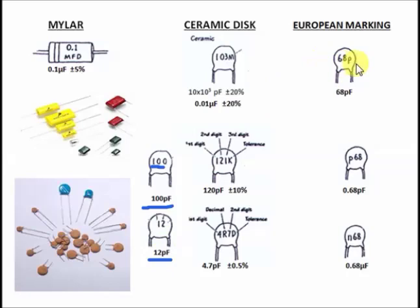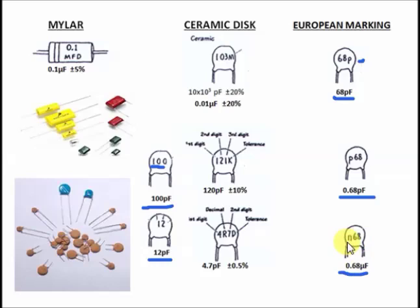Now for European marking. If you see '68p', that means 68 picofarad. If the 'p' is at the front — 'p68' — that means 0.68 picofarad. For the third example, 'N68' means 0.68 microfarad, because in European marking the letter 'N' is equivalent to micro — not nano. So in European marking, N equals microfarad.